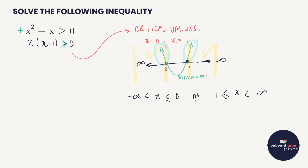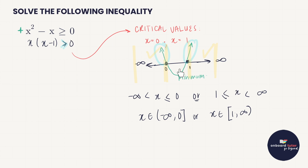You could also write this in interval notation. x is an element from minus infinity up to 0 — things that are not included get a round bracket, things that are included get a square bracket. Or x is an element from 1 to infinity — infinity gets a round bracket, 1 gets a square bracket. So what did we do? We factorized, we got critical values, those helped us to plot intercepts so we could draw the parabola. Hot tip: make sure that your x squared has a positive coefficient, because it definitely makes drawing the parabola easier. And once we had done that, we simply interpreted that we wanted the part above the axis.